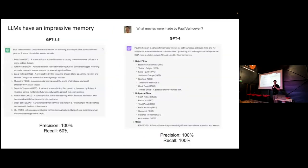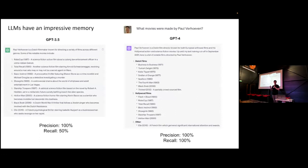First part: general purpose LLMs. If you've played with ChatGPT, especially GPT-4, you'll notice it has impressive memory. I asked what movies were made by a famous Dutch movie director — he made movies such as Robocop. GPT-3.5 gave all the movies correctly with 100% precision, but missed about half. GPT-4 gave all the movies he made. It's impressive that these models, even though they weren't designed to be memorizers or databases, still have this capacity.